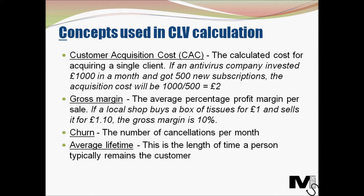The next concept is gross margin — the average percentage profit margin per sale. For example, if a local shop buys a box of tissues for £1 and sells it for £1.10, the gross margin is 10%. For businesses that buy from someone and sell to somebody else, it's basically the money added on top of the buy price — that's essentially the gross margin.